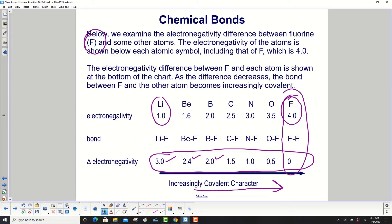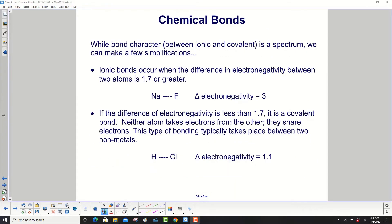the bond between F, fluorine, and the other atom becomes increasingly covalent. While bond character between ionic and covalent is a spectrum, a continuous spectrum, we can make a few simplifications. Ionic bonds occur when the difference in electronegativity between two atoms is greater than or equal to 1.7.